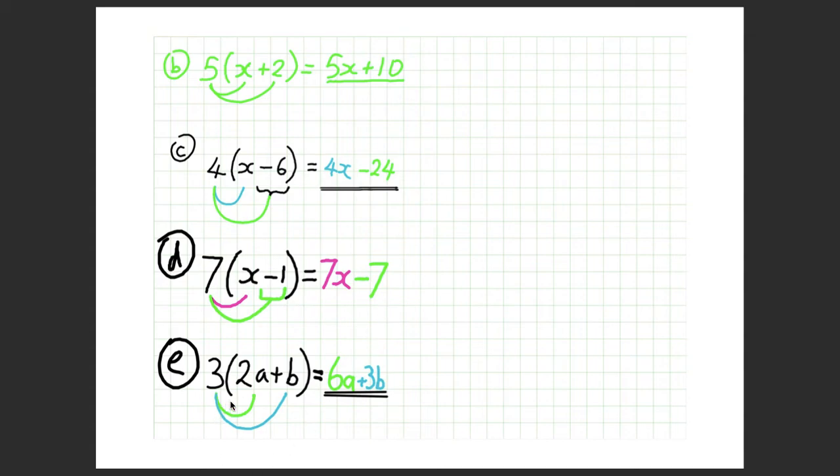And then 3 brackets 2a plus b, so 3 times 2a gives you 6a, and 3 times b gives you 3b.